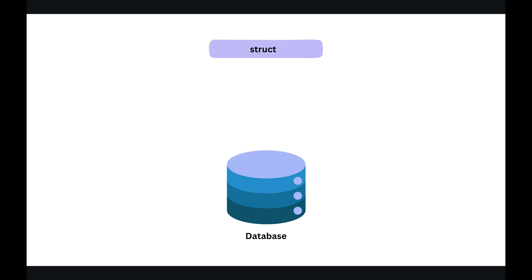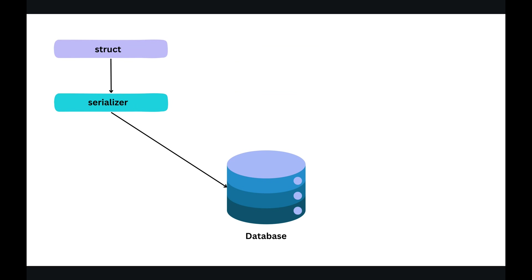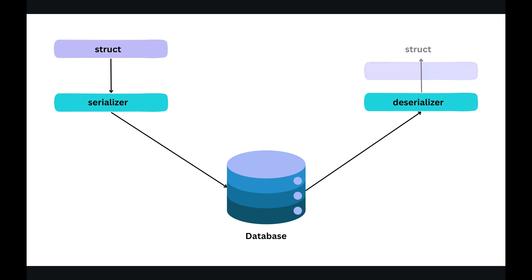Let's briefly understand what a serializer is. In the context of object relational mapping, a serializer refers to an extension that allows us to automatically convert struct fields into a specific format like JSON or GOB when interacting with a database. While retrieving, the data is converted back to the corresponding structure. This process is called deserialization.